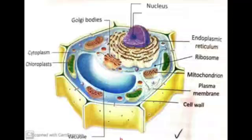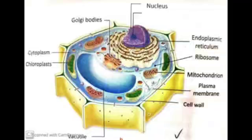Vacuoles contain liquid material inside them called cell sap. Because of this cell sap, they provide turgidity and rigidity to plant cells. The cell sap constitutes materials like sugars, amino acids, proteins, and some organic substances.